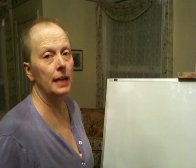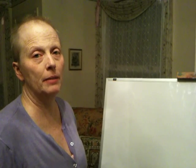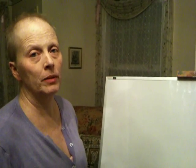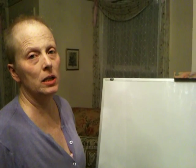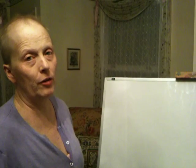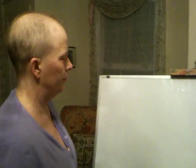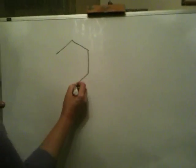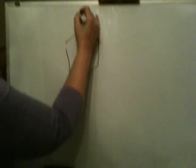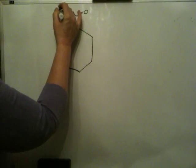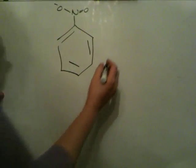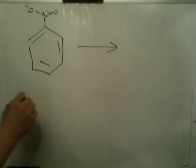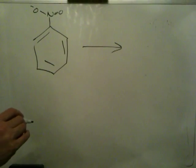As I said in class, the typical electron withdrawing group has a delta plus or a full plus charge on the atom adjacent to the aromatic ring. As an example, I'm going to use the nitro group which is a very strong electron withdrawing group.